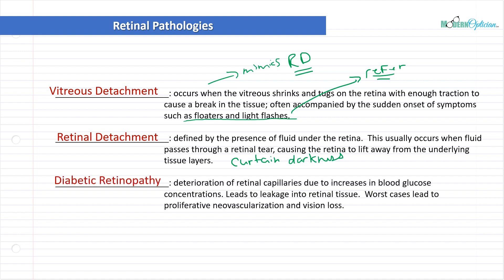Now, what about diabetic retinopathy? Diabetic patients have to be examined on a regular basis. There are other things that happen in diabetes — for example, index myopia, where the makeup of the aqueous humor and lens changes because of increased blood sugar levels, altering the index of refraction and changing vision. But one of the main later-stage complications of diabetes is deterioration of retinal capillaries due to increased blood glucose concentrations, and this leads to leakage into retinal tissue.